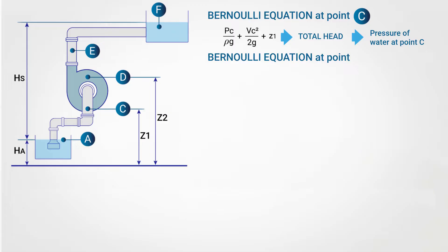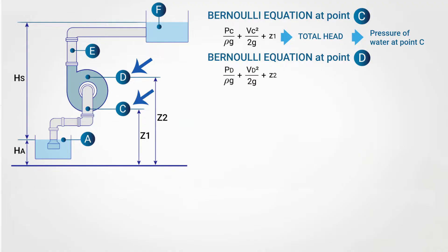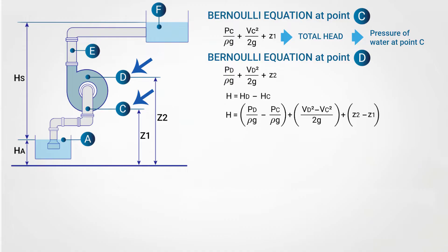A very similar application of the Bernoulli equation is made at point D, which is where the water is leaving the pump. The equation is: PD divided by ρg, plus VD squared divided by 2g, plus Z2. To calculate the total head of the pump, I subtract the total head at point C from the total head at point D, giving HD minus HC, which equals (PD − PC)/ρg plus (VD² − VC²)/2g plus (Z2 − Z1), yielding H.